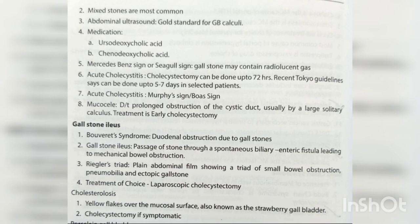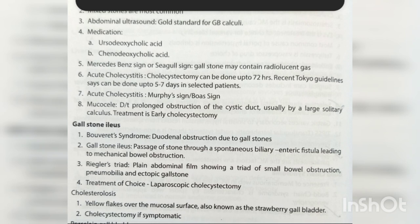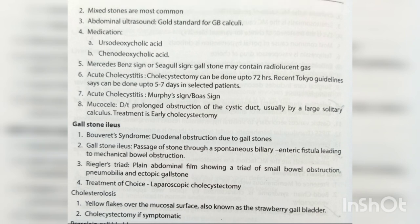Mixed stones are most common. Abdominal ultrasound is the gold standard for gallbladder calculi. Medications include ursodeoxycholic acid and chenodeoxycholic acid. Mercedes-Benz sign or seagull sign: gallstones may contain radiolucent gas. Acute cholecystitis: cholecystectomy can be done up to 72 hours; recent Tokyo guidelines say up to 5–7 days in selected patients. Murphy's sign or Boas' sign is present. Mucocele occurs due to prolonged obstruction of the cystic duct, usually by a large solitary calculus; treatment is early cholecystectomy. Gallstone ileus: bowel obstruction due to gallstones passing through a spontaneous biliary enteric fistula. Rigler's triad on plain abdominal film shows small bowel obstruction, pneumobilia, and ectopic gallstone. Treatment of choice is laparoscopic cholecystectomy.